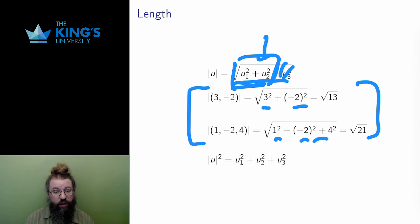This length is also called norm, and a vector of length 1 or norm 1 is called a unit vector. The zero vector, the origin, is the only vector of length 0.